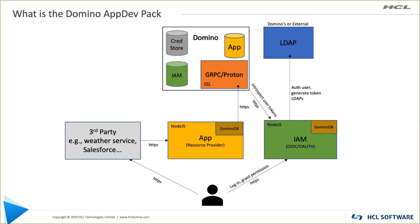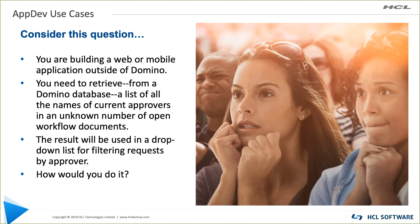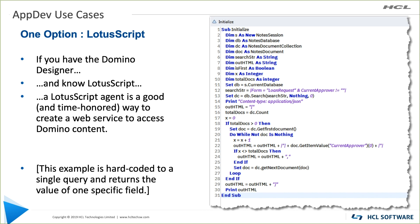The gRPC protocol and the architecture shown here is often used in microservices architectures. Consider this scenario: you're building a web or mobile application outside of Domino, but you would like to retrieve data from a Domino database — for instance, to query the names of current approvers and fetch an unknown amount of workflow items, then display the result as a drop-down list for filtering by approver. One option is to use LotusScript, which requires Domino Designer installed and knowledge of LotusScript.